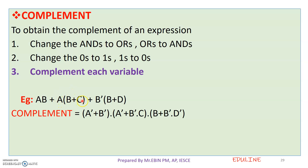We did all the variables. This is the C bar. I will complement the C bar; C bar becomes plus. Then we will use dot. Then we complement: B bar becomes B. This is the multiplication. Then B is complemented. Then this is D bar. Then we have A̅ plus B̅ plus C̅.